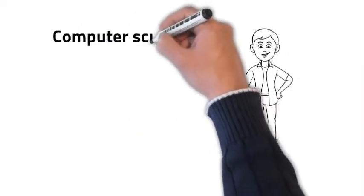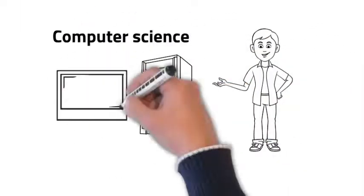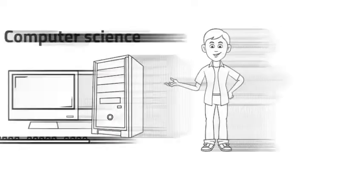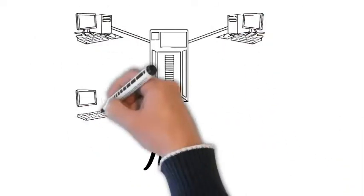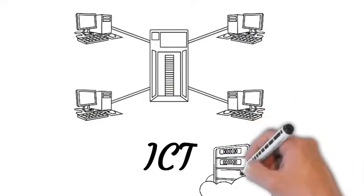Computer science is the study of the principles and use of computers. ICT, or Information and Communications Technology, is the infrastructure and components that enable modern computing.